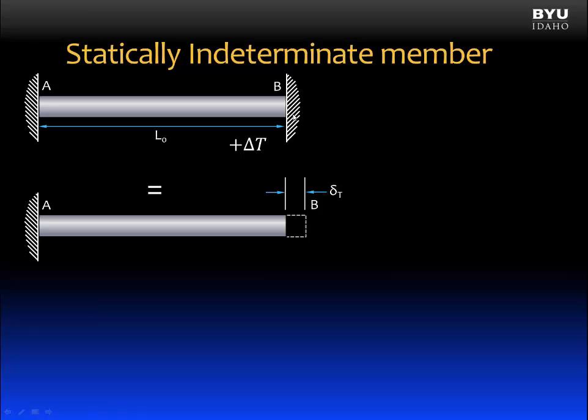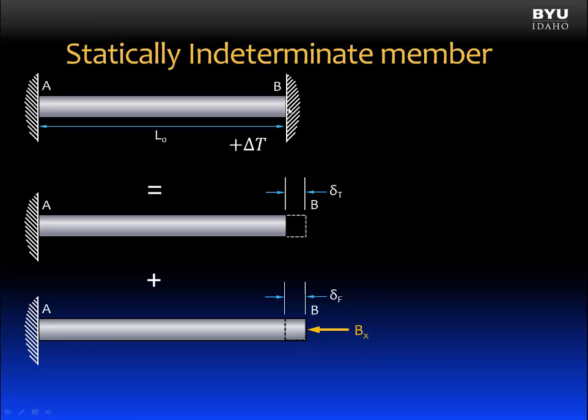If we remove the wall at B, then the member can freely expand, and it would expand by the amount δ_T, which we can calculate. But in reality, the wall will not let it expand. The wall will push back with a force of B_x, and it will push with a force sufficient to create a deflection that we will call δ_F.